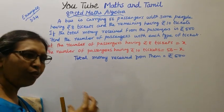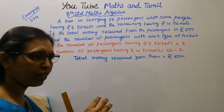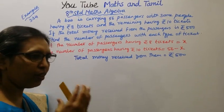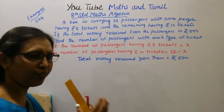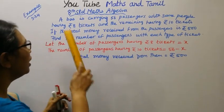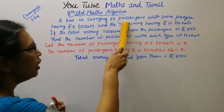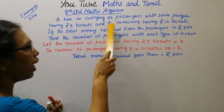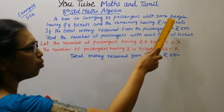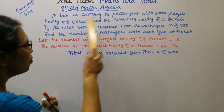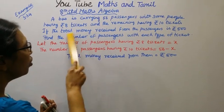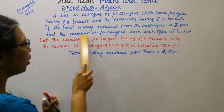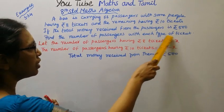The bus is carrying 56 passengers — some having Rs. 8 tickets, the remaining having Rs. 10 tickets. The total money collected from all 56 passengers is Rs. 500. We need to find the number of passengers with each type of ticket.